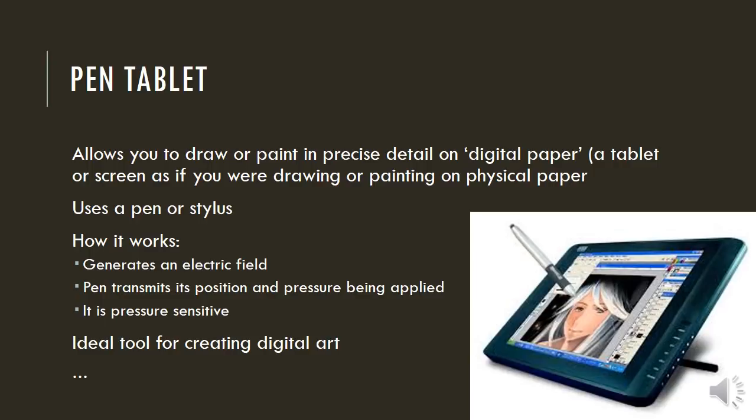A pen tablet is also an input device. It allows you to draw or paint in precise detail on digital paper as if you were drawing on physical paper. It uses a pen or stylus. It works by generating an electric field, and the pen transmits its position and the pressure being applied — it's pressure sensitive. It's an ideal tool for creating digital art, and the iPad Pro has this facility included.